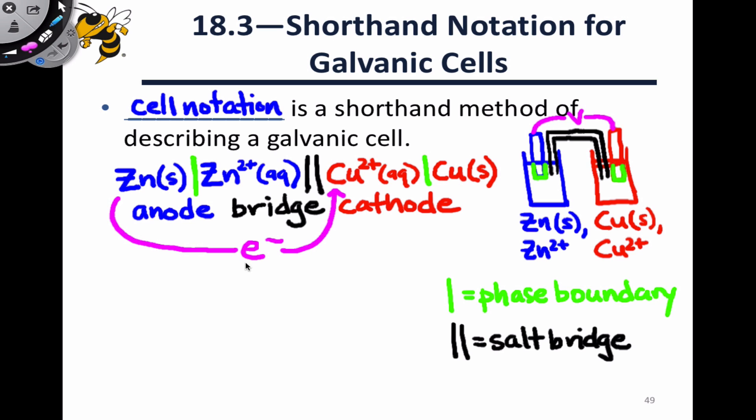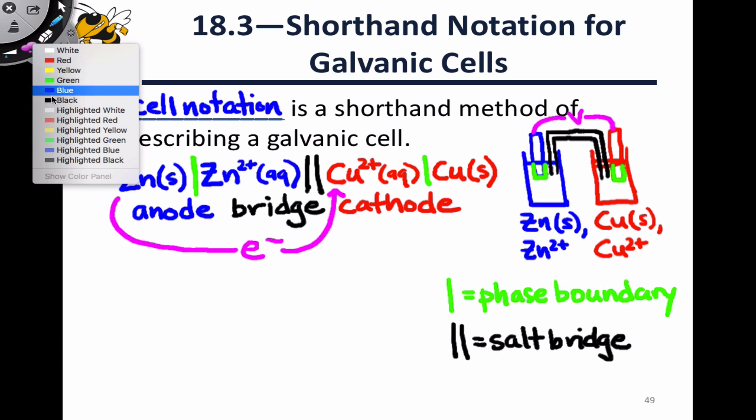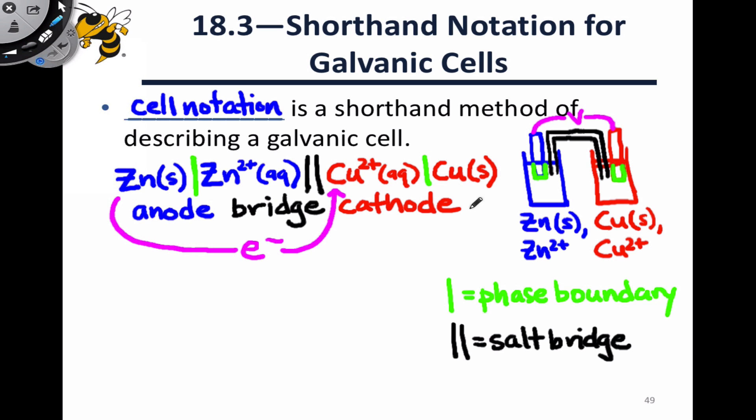What this also allows us to do is immediately write a balanced redox reaction for the process occurring within the galvanic cell. Reactants always appear first, and so we can immediately write on the reactant side zinc solid and aqueous Cu2+. What's interesting about this is even though the zinc solid and the Cu2+ are not directly sitting in the same beaker, the redox process happens across the wire as electrons are transferred across it.